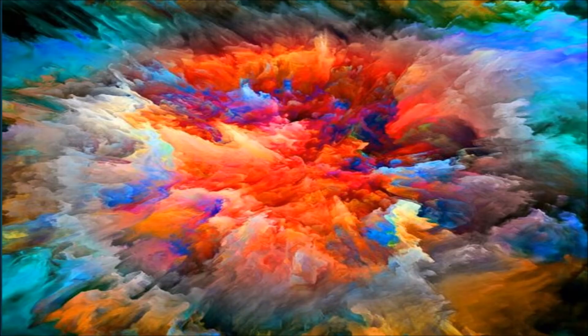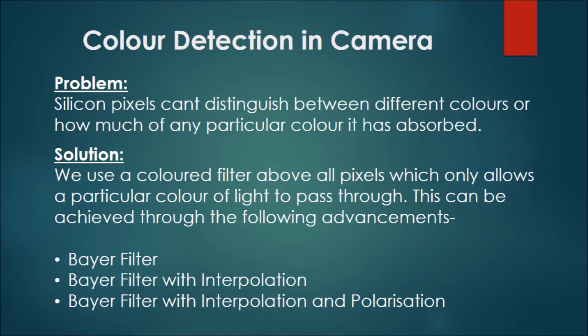After the conceptualization of image sensing and capturing, we now move on to the broader basis of what color sensing and capturing actually is. The very inherent problem in color detection in cameras is that silicon pixels cannot distinguish between different colors or how much of any particular color has been absorbed, given the incidence of photons only. The solution to this problem is by using a colored filter above all pixels, which only allows a particular color of light to pass through it. This can be achieved through the following advancements: Bayer filter with interpolation, and polarization.